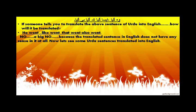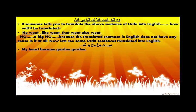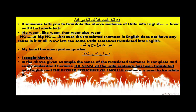Now let's see some Urdu sentences translated into English. 'Mera dil baag baag ho gaya' — if you translate it word to word, it becomes 'My heart became garden garden,' which makes no sense. But 'Mane usse padhaya' becomes 'I taught him/her.' The sense of the translated sentence is complete and easily understood because the sense of the Urdu sentence has been translated into English using the proper structure of an English sentence, not translated word to word.